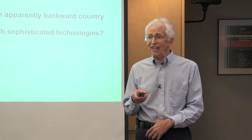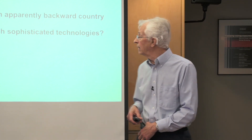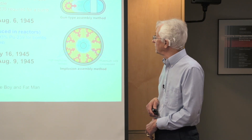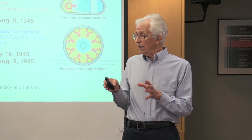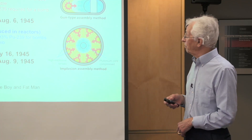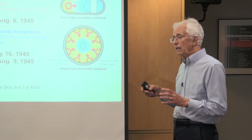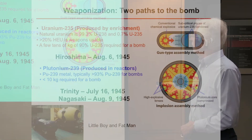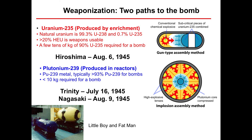So how can an apparently backward country like North Korea actually develop such sophisticated technologies? First, they not only have to make the fuel — they also have to do weaponization, meaning building the bomb itself. There are essentially two paths to the bomb. One path, which works particularly for highly enriched uranium, is to take two halves of highly enriched uranium, put them in a gun barrel essentially, and slap them together as fast as you can. When you do that, you get fission, you get a chain reaction, and you get it quickly enough that it blows up and gives you incredible power.